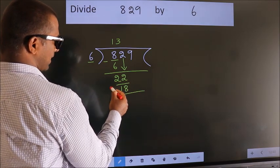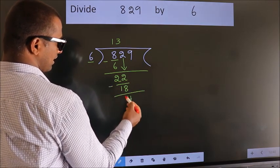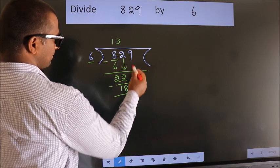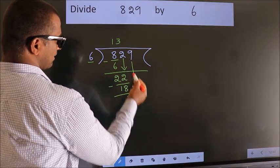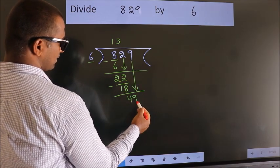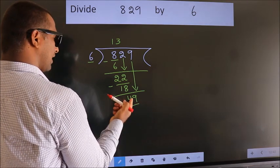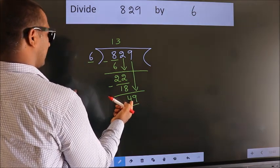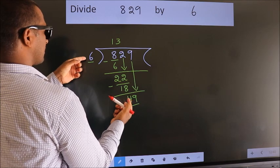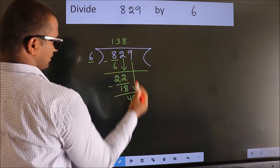Now we subtract, we get 4. After this, bring down the beside number, so 9 down, so 49. A number close to 49 in 6 table is 6 8s, 48.